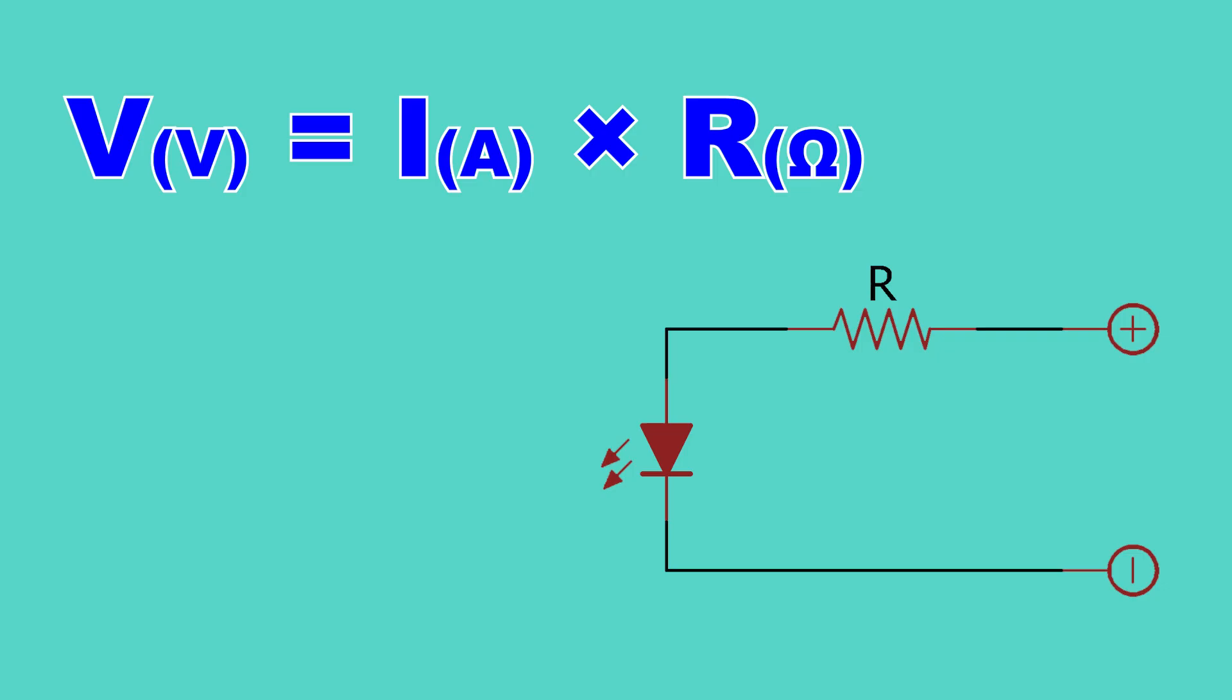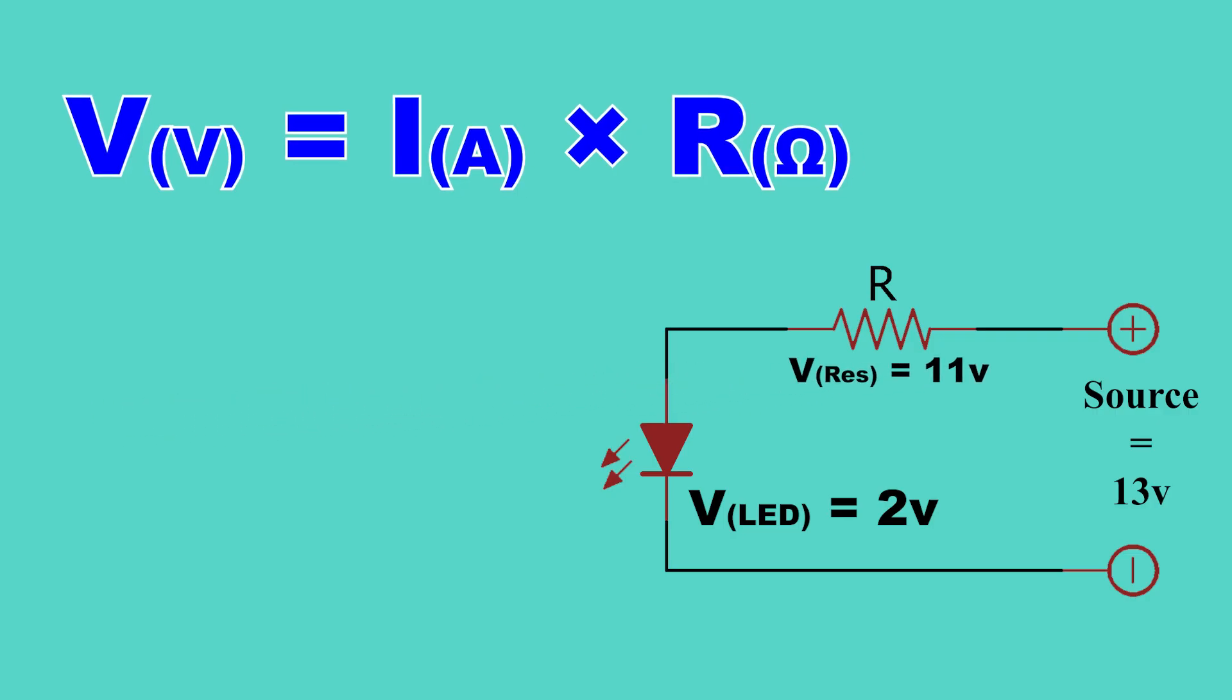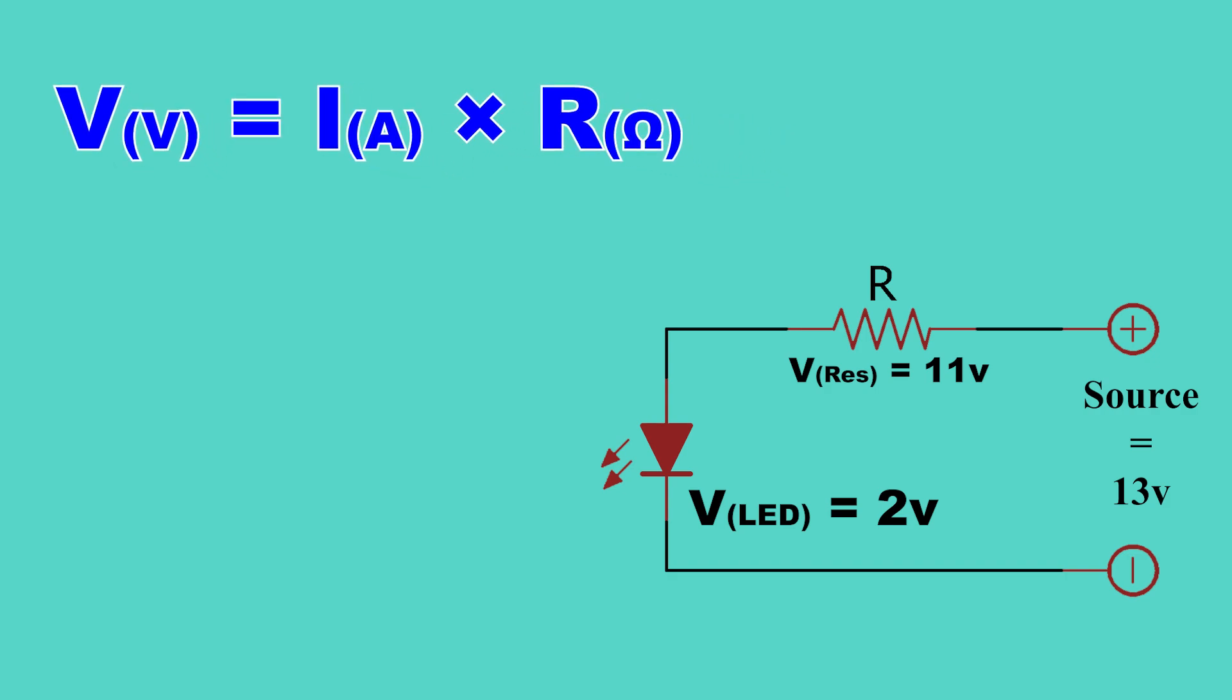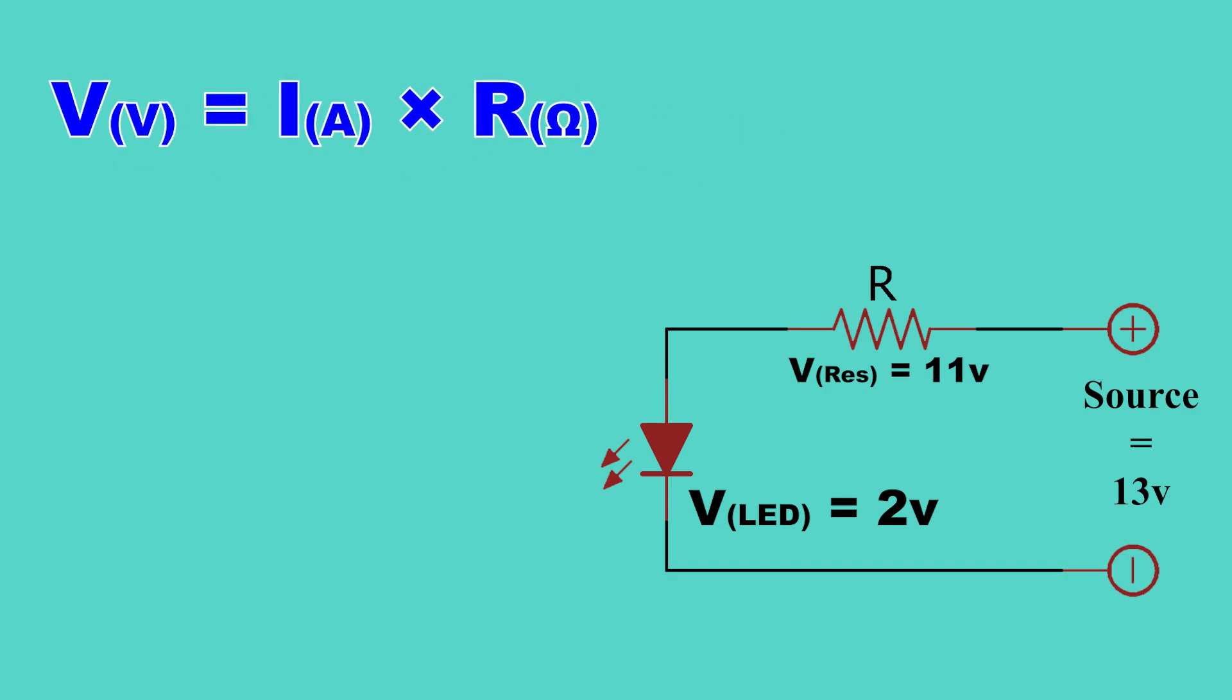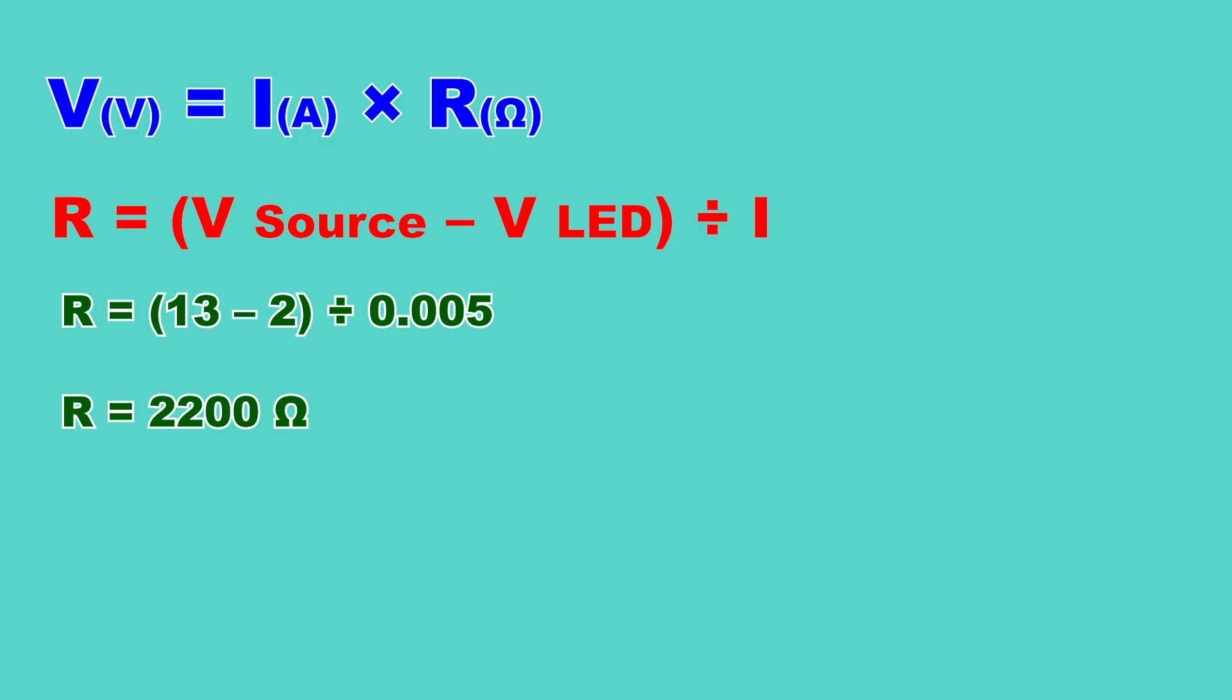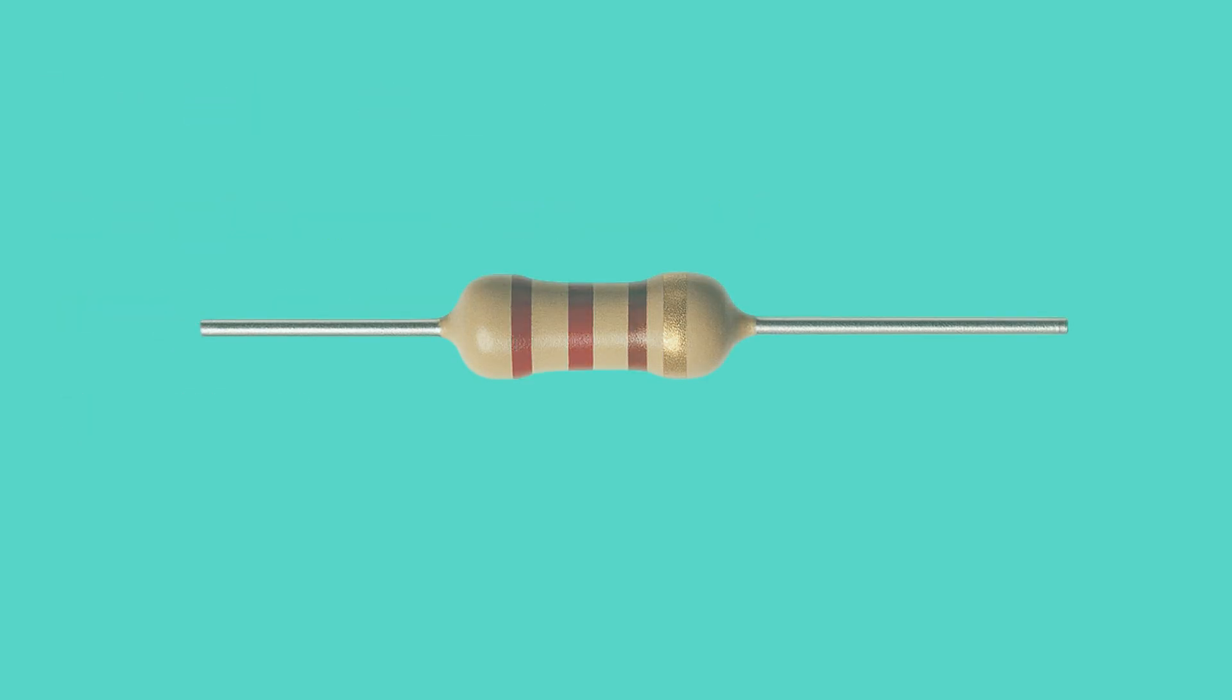Since our LED needs about 2 volts, we have to drop the extra 11 volts from the power supply across a resistor. So we apply Ohm's law to calculate the resistor value, where the voltage drop should be 11 volts. The formula is R equals V source minus V LED, divided by I. R equals 2200 ohms. So we need a resistor of about 2200 ohms.